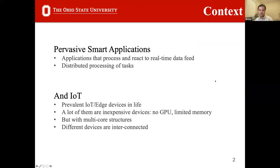The work targets applications that process and react to real-time data feeds and distribute processing of tasks among edge and central devices. The goal is to provide a general set of APIs so that applications can be easily mapped to different multi-core environments. This is particularly relevant because most inexpensive IoT devices lack GPUs or neural accelerators, yet multi-core processors are common and demonstrate great potential for local workload processing.